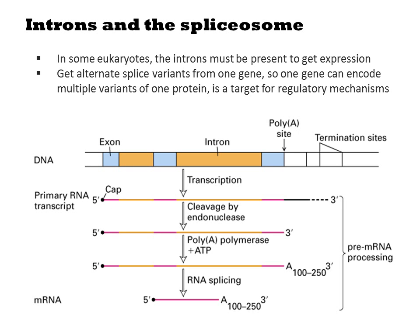Once an mRNA is generated, it often undergoes splicing, which removes regions of the sequence called introns to join together fragments of the protein. Often the exons encode domains of a protein, and this separation of distinct domains enables modular recombination in such organisms. In some eukaryotes, the introns are necessary for expression, and synthetic genes that lack introns will not express as well. One gene can also give rise to multiple splice variants, thus encoding multiple variants of a protein that may include some domains and not others. This splicing is also sometimes a target of regulation.